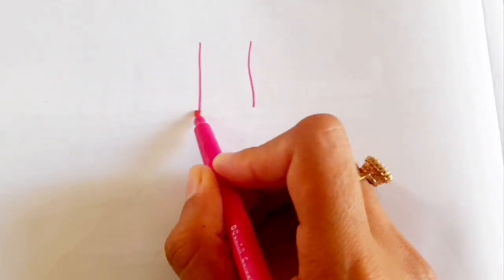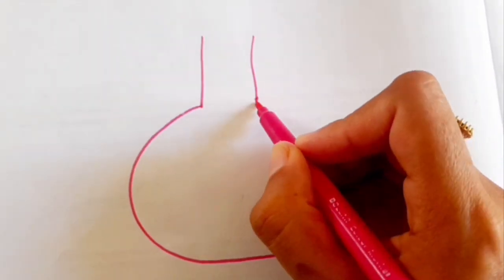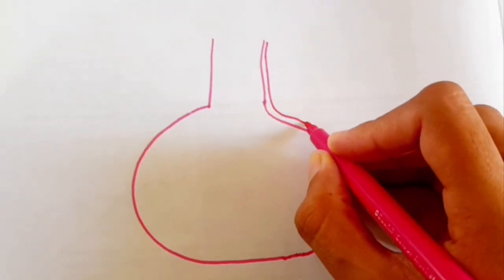Today we will learn how to draw a histology diagram of the pituitary gland. First of all, you need to draw a flask shape.